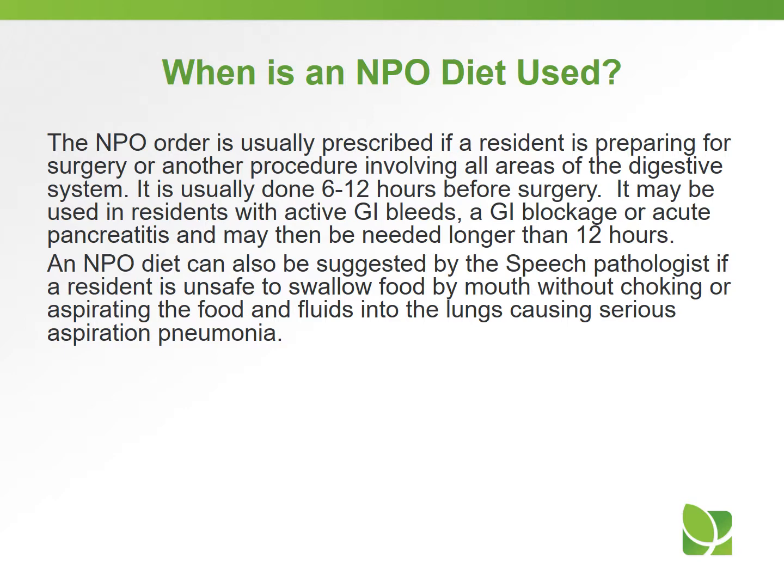When is an NPO diet used? The NPO order is usually prescribed if a resident is preparing for surgery or other procedure involving the digestive system. It is usually done six to 12 hours before surgery. It may be used in residents with active GI bleed, a GI blockage, or acute pancreatitis, and may be needed longer than 12 hours. An NPO diet can also be suggested by the speech pathologist if a resident is unsafe to swallow food by mouth without choking or aspirating food and fluids into the lungs, causing serious aspiration pneumonia.